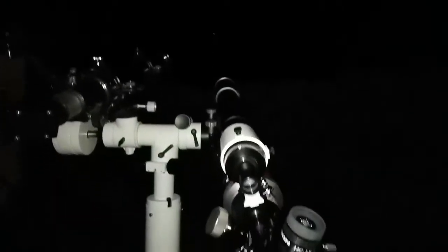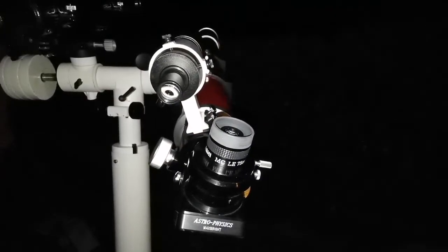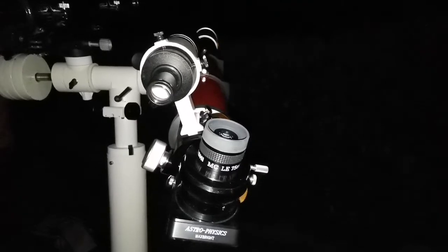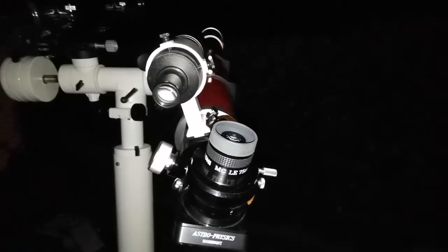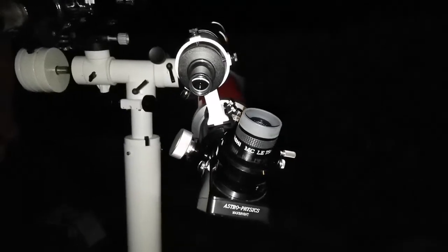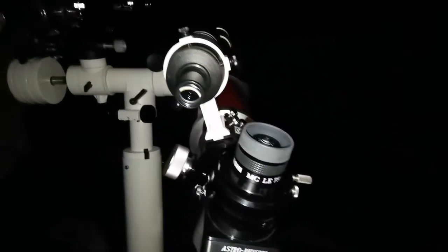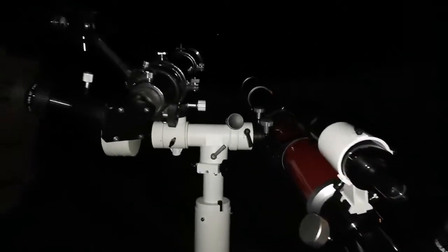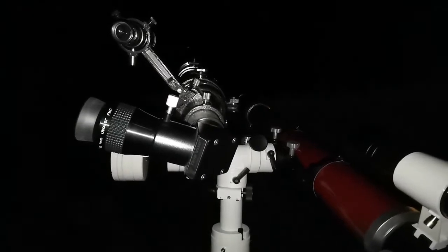And now I'm pointing both of them to Jupiter and trying to see what differences I can notice. I'm using Takahashi LE 7.5 millimeter on the Lira or Starwave 102 refractor. And on the EVO Star, I'm using the Skywatcher 7 millimeter eyepiece.